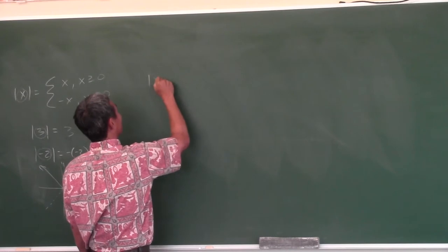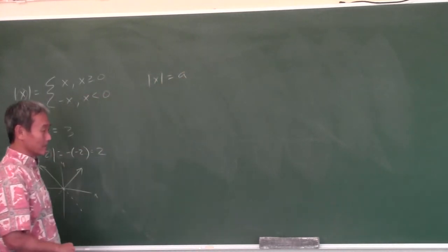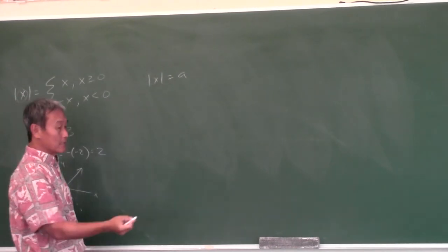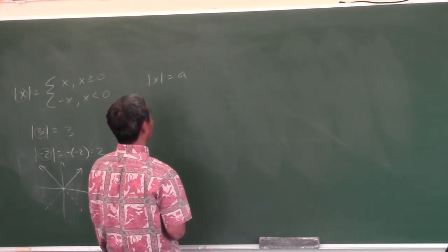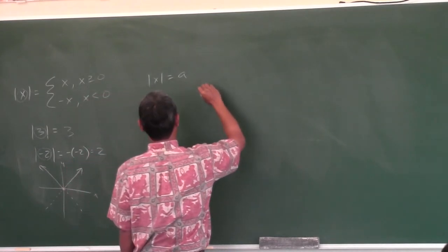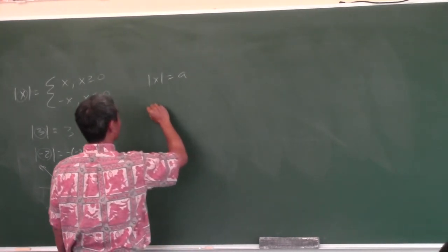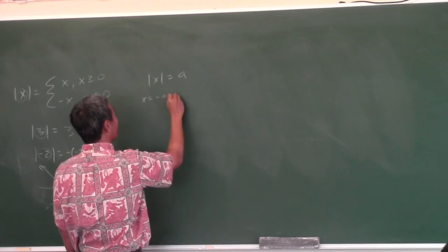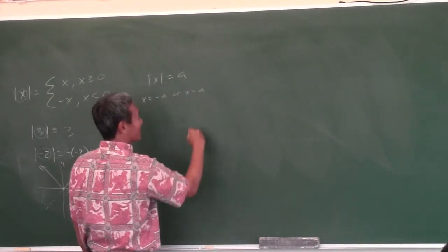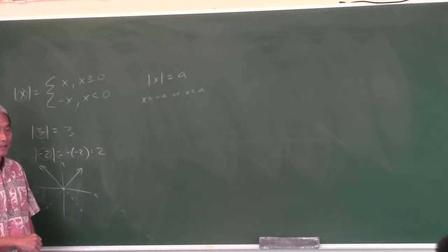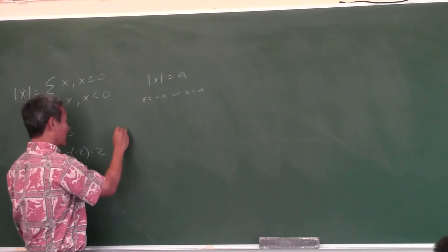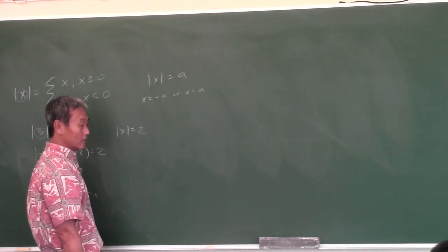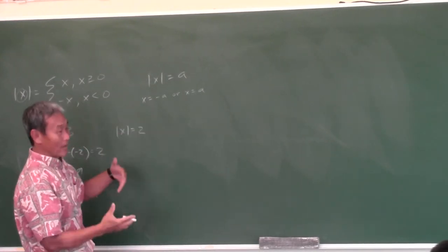In this class we're going to graph absolute value of more difficult functions, so you have to know how absolute value works. What does absolute value of x equals a mean, where a is a constant? Like, absolute value of x equals 2 — what values of x make it true? Two or negative two. So x equals 2 or x equals negative 2.